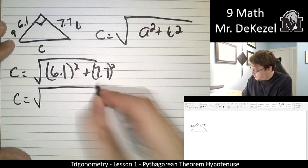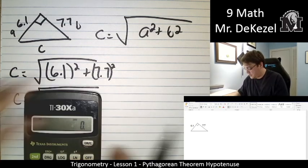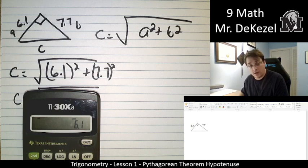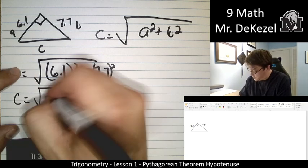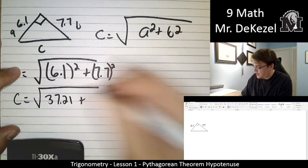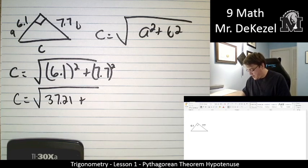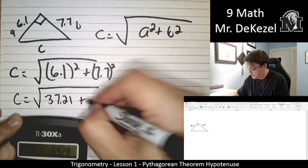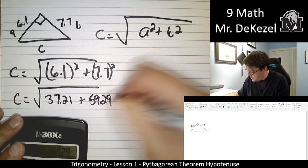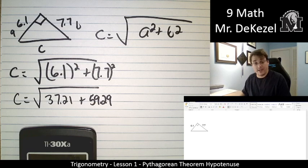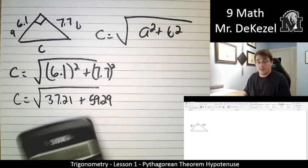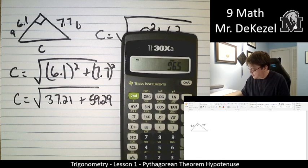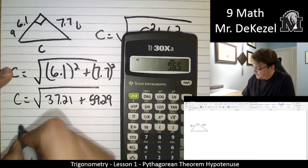C is equal to the root of what? 6.1 times 6.1. 37.21. I'm going to add it to the other one, which is 7.7 squared. Multiply that by itself twice. That's 59.29. Go ahead and add them together. So plus 37.21. That's 96.5.